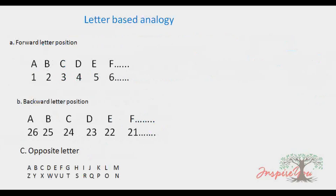Now let's look at Letter-based analogy. Letter-based analogy is critical. The letters A, B, C, D, E, F correspond to positions 1, 2, 3, 4, 5, 6 respectively in their forward positions.